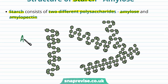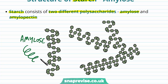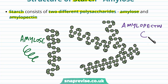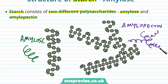Looking generally, on the left we have amylose, which looks like a kind of slinky shape, and on the right we have amylopectin, which also has slinky shapes but with other slinky shapes joined on to them — so it's much more spidery looking.